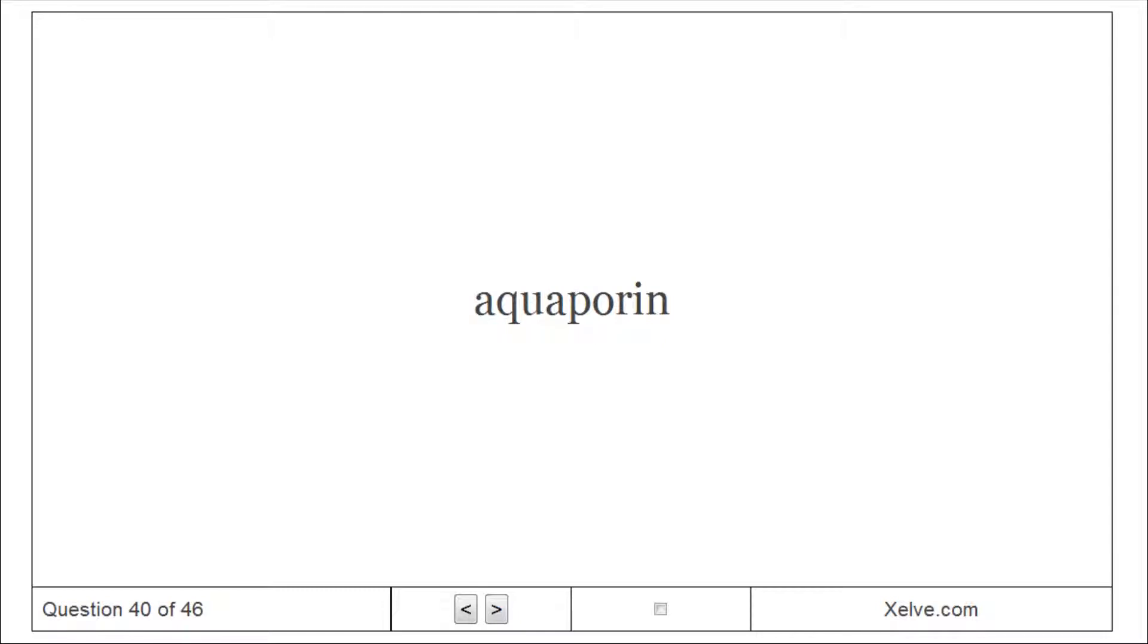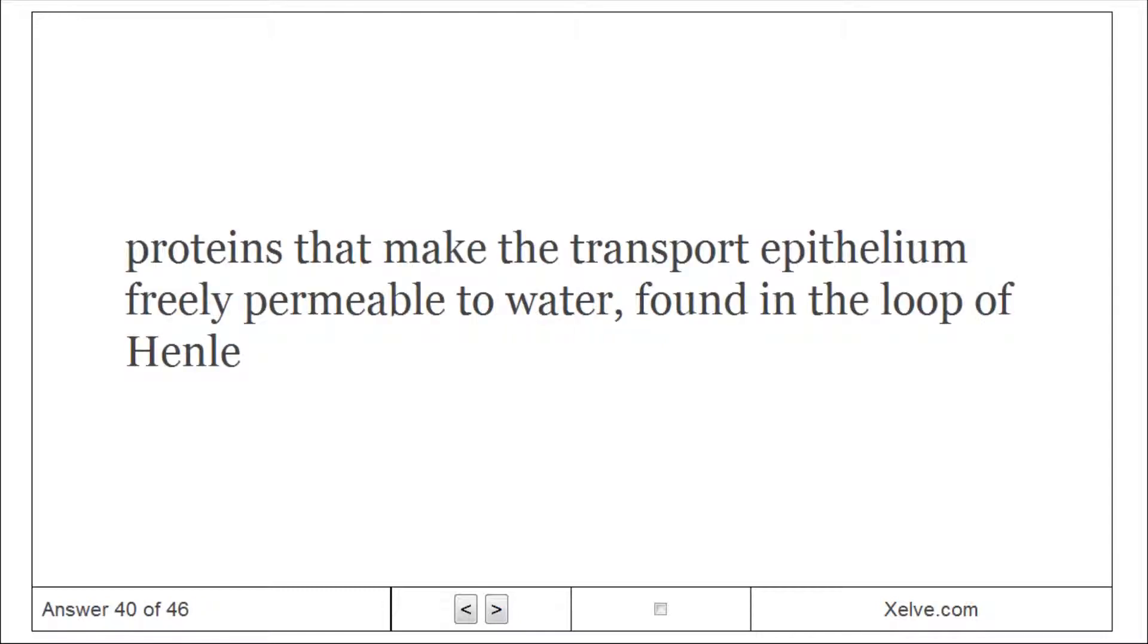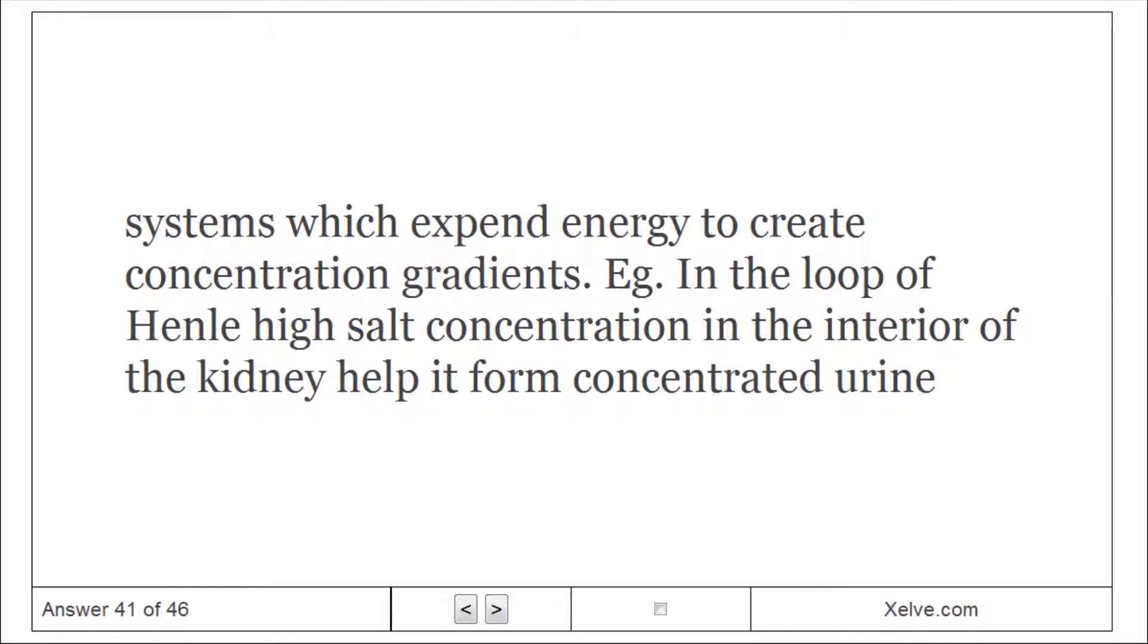Aquaporin: Proteins that make the transport epithelium freely permeable to water, found in the loop of Henle. Countercurrent multiplier systems: Systems which expend energy to create concentration gradients, e.g. in the loop of Henle. High salt concentration in the interior of the kidney helps it form concentrated urine.